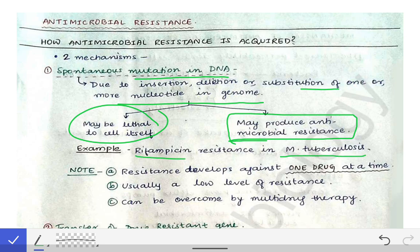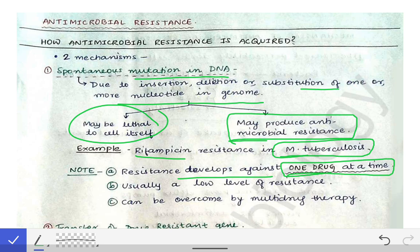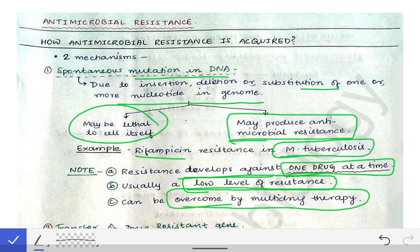An example is rifampicin resistance in Mycobacterium tuberculosis, which is an example of spontaneous mutation in DNA. Some important points: with this mechanism, resistance usually develops against one drug at a time only. It is usually a low-level or low-grade resistance — not a very strong resistance.